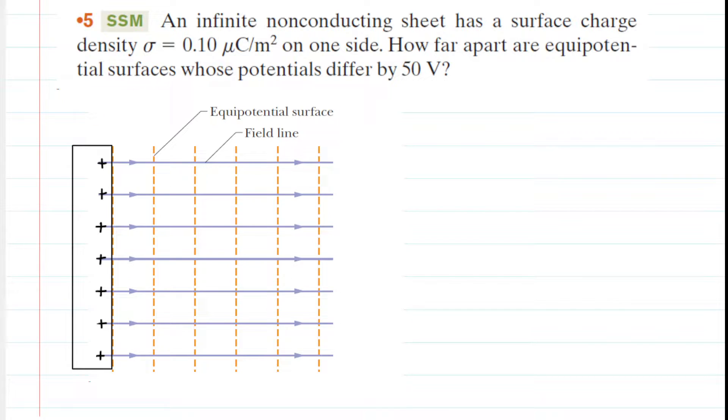We have an infinite non-conducting sheet, which we have drawn on the left side of the diagram. That infinite non-conducting sheet is producing electric field lines. You can see the electric field lines are projecting to the right. And then perpendicular to those electric field lines, we have these equipotential surfaces. What that means is every point on a given dashed line would have the same potential.